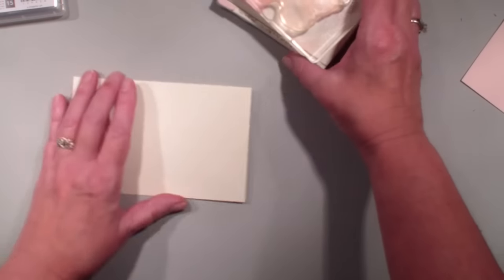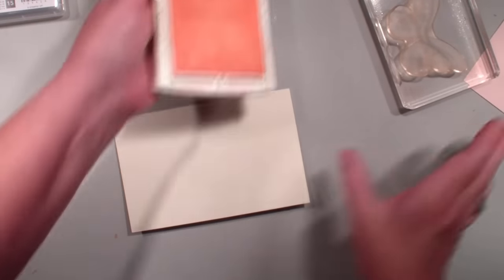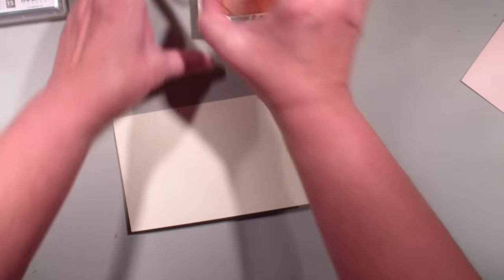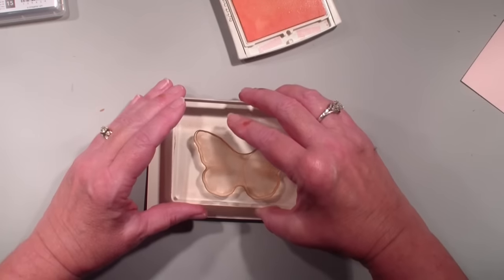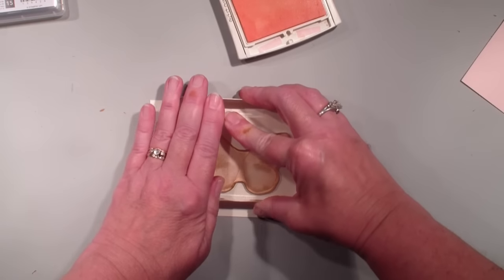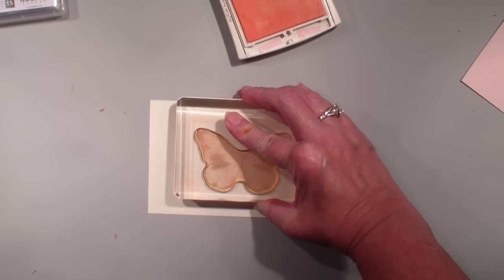What I'm going to do first is I'm going to take the solid one. I'm going to use the pink pirouette. I'm going to stamp that. And you're going to notice when you stamp this that...